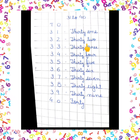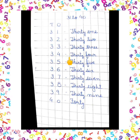33: THIRTY (T-H-I-R-T-Y) + THREE = 33. 34: THIRTY (T-H-I-R-T-Y) + FOUR (F-O-U-R) = 34.